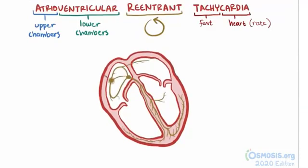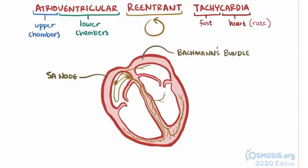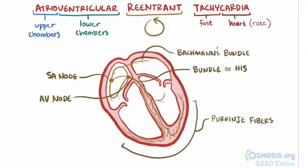Normally, an electrical signal starts at the sinoatrial or SA node in the right atrium. It then propagates out through both atria, including Bachmann's bundle in the left atrium, and then contracts both atria. It's then delayed just a little bit as it goes through the atrioventricular or AV node, before it passes through the bundle of His and onto the Purkinje fibers of the left and right ventricles, causing them to contract as well.